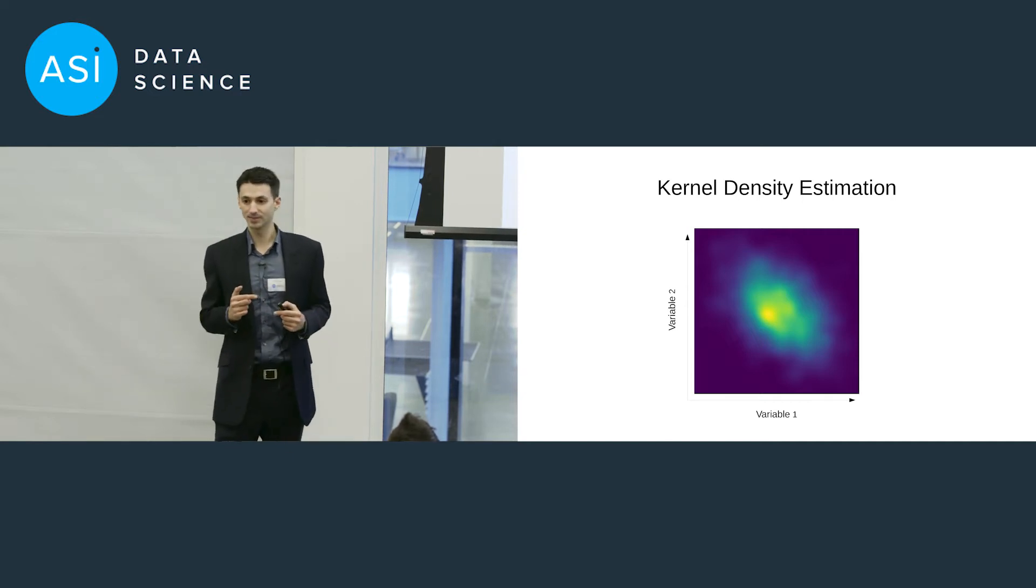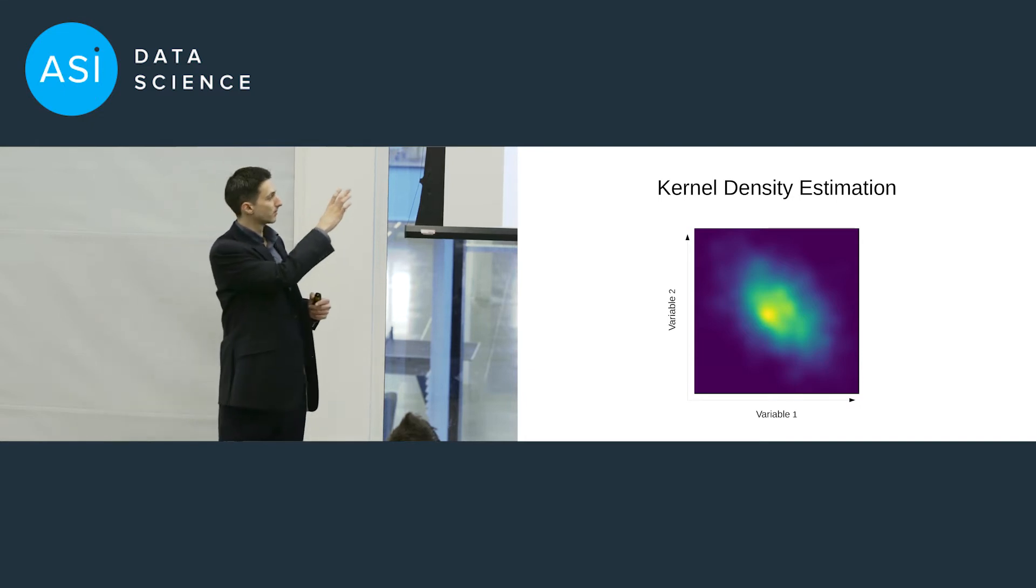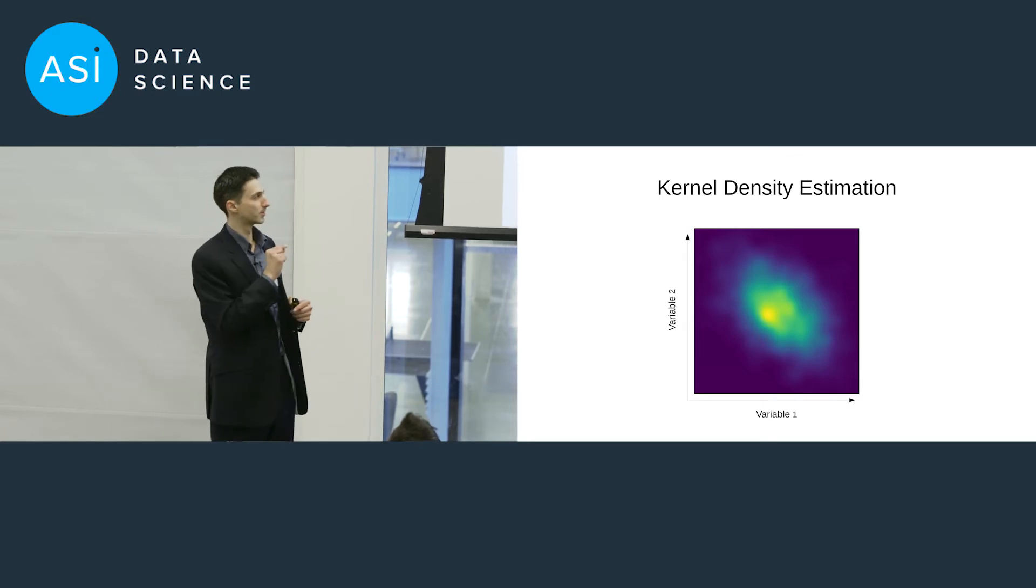And one way to do kernel density estimation is to use a library like scikit-learn. scikit-learn is great because the implementation there is very general. You put in your data and then you can compute the image that you get out in the end. It works, but it's perhaps not as ideal for the purposes that we're looking for here.